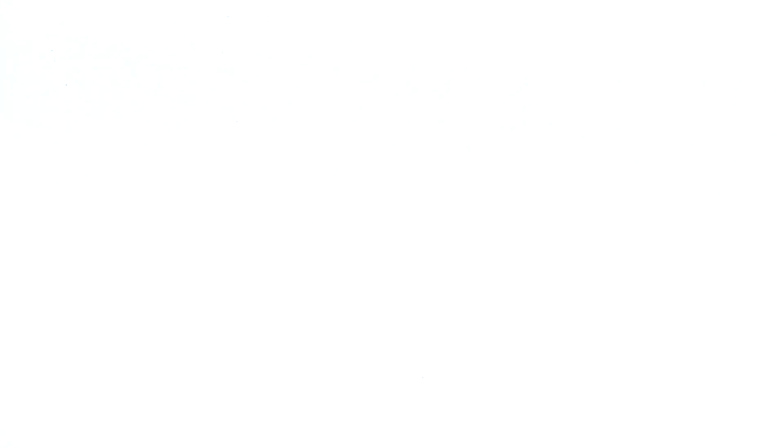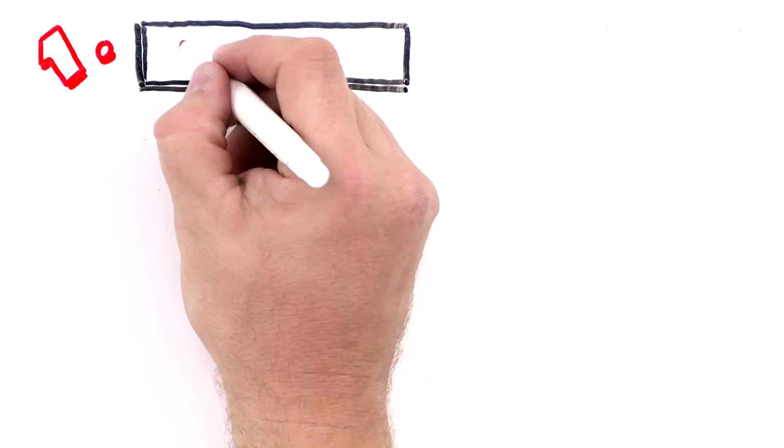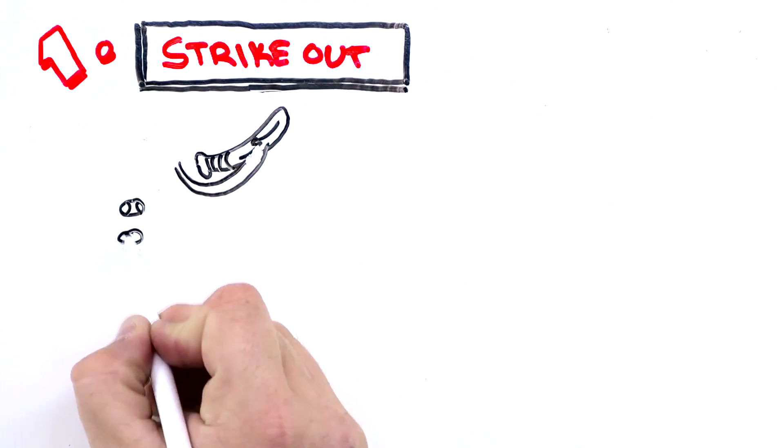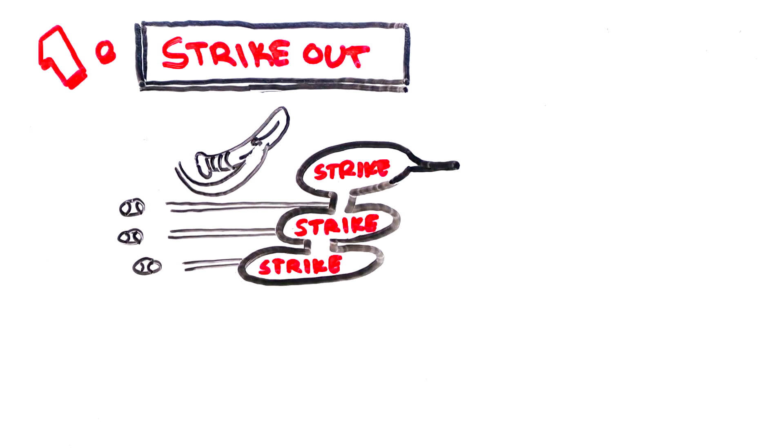There are a few other ways for the defense to get the offense out. First is the strikeout, which we've discussed, where the batter misses three pitches.